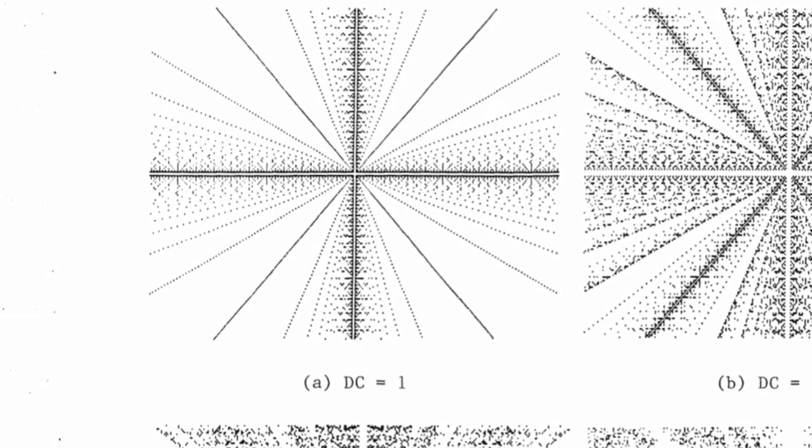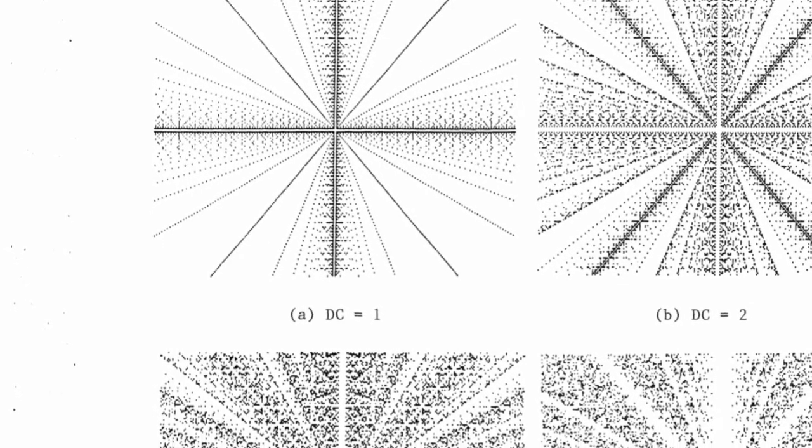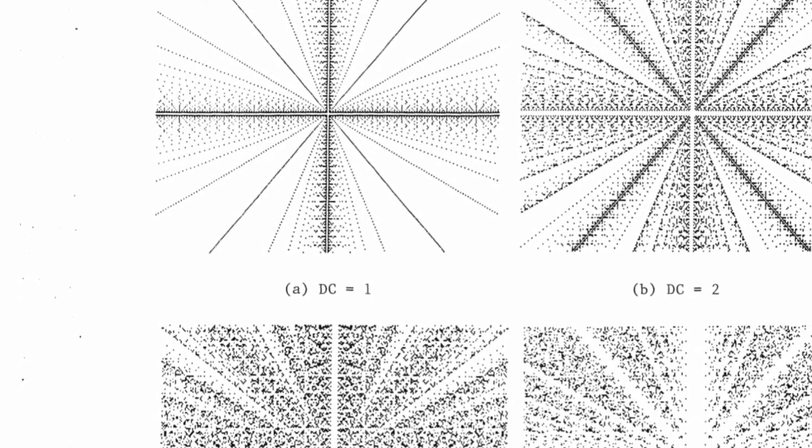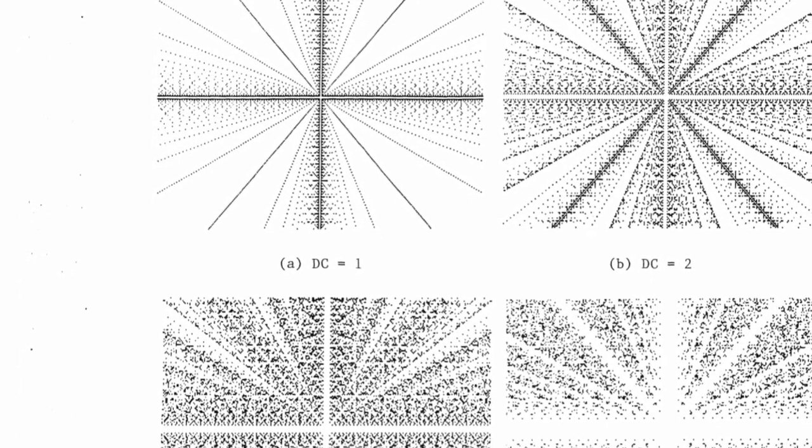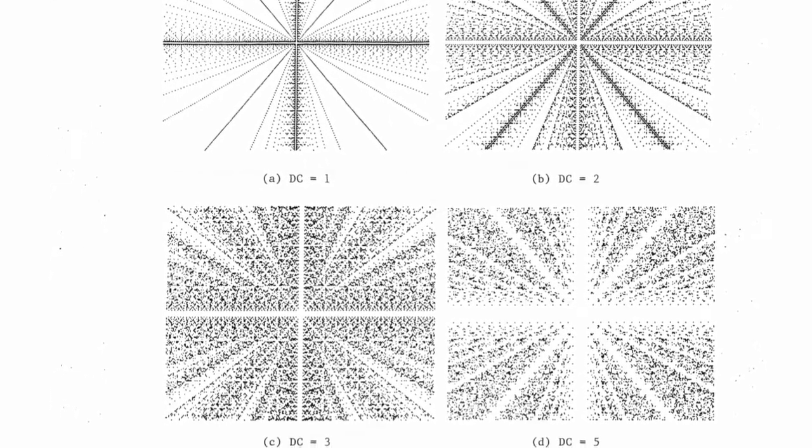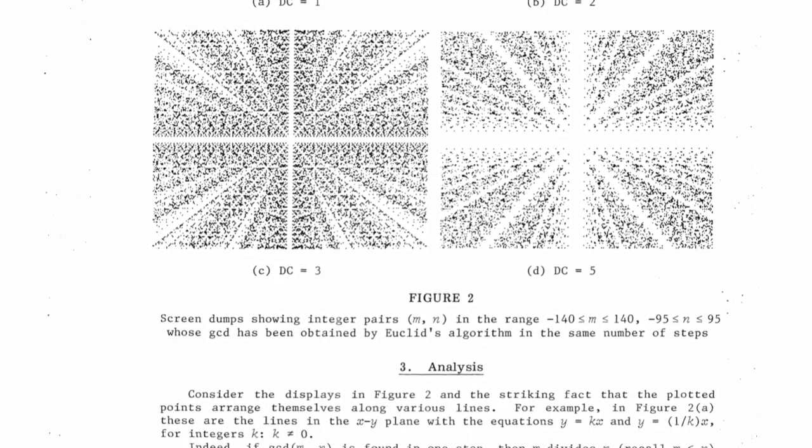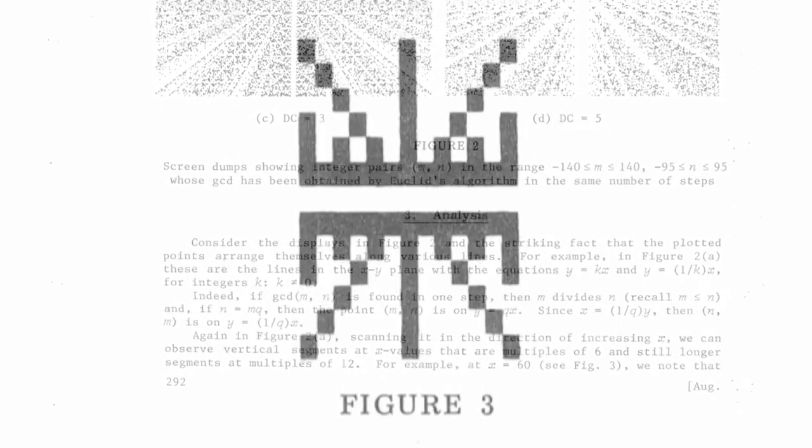It is clear that the GCD of two integers is obtained in one step when one of them is a multiple of the other. So, if N equals K times M for some integer K, then the point (M, N) lies on the straight line Y equals KX. As GCD of (N, N) equals GCD of (M, N), the plots are symmetric about the line Y equals X. So, here the point (N, M) lies on the line with the slope 1 by K. In the same figure, we observe vertical segments at X values which are multiples of 6. We come across even longer segments for multiples of 12. The example given in the paper is for X equal to 60.